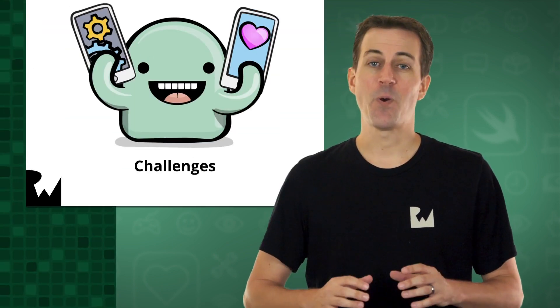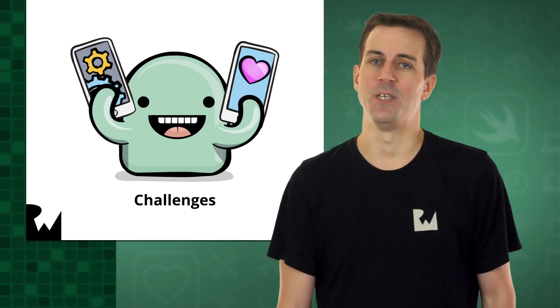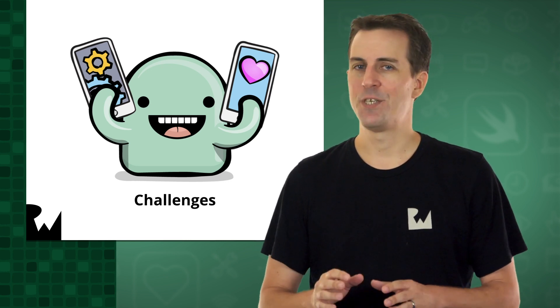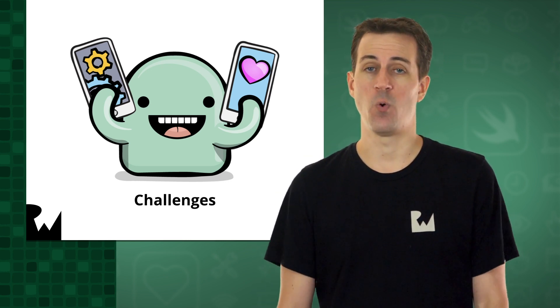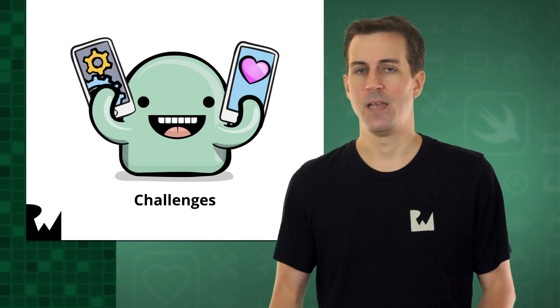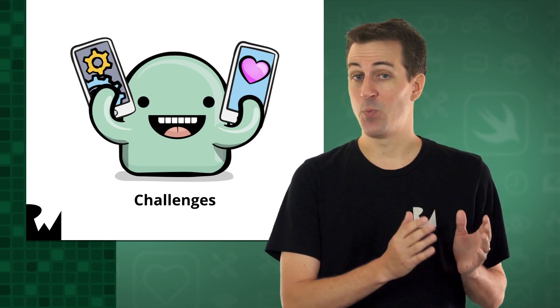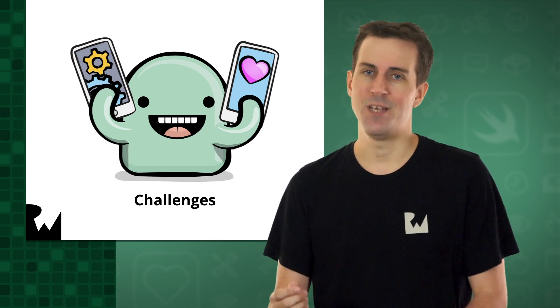In this part of the course, you'll get some more practice coding in Swift by adding the rest of the core gameplay features of Bullseye. This part of the course has a ton of challenges and this is on purpose. We want to give you plenty of time to practice everything you've learned so far in the course and let it all sink in. After all, being able to follow the steps is one thing, but being able to do it on your own is another.